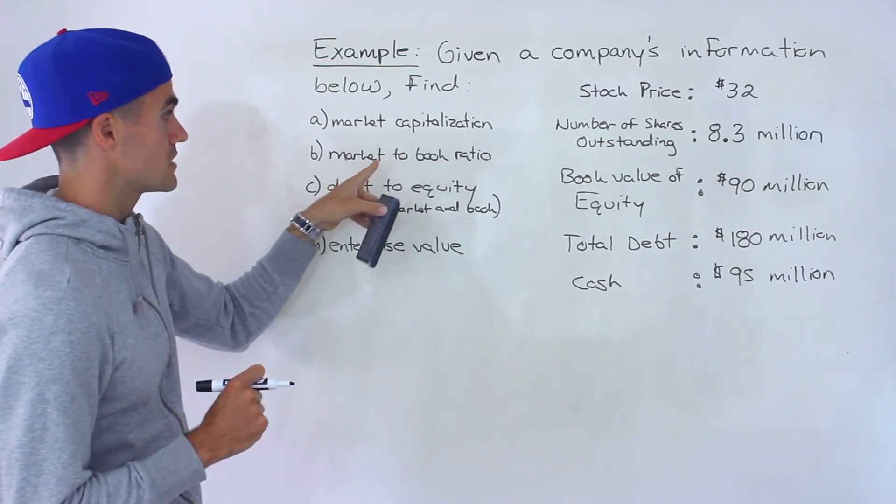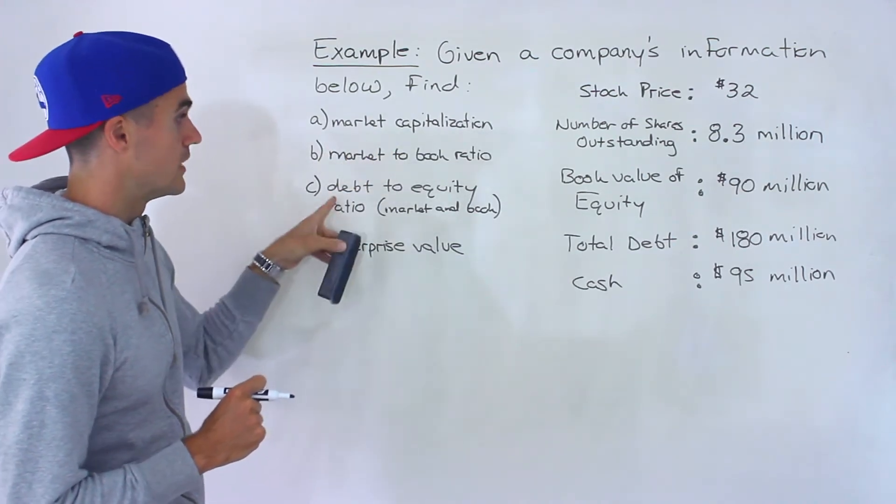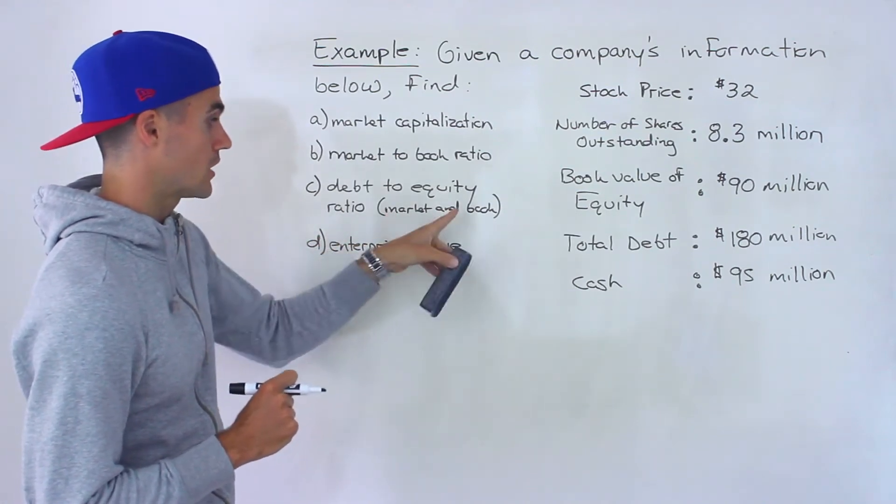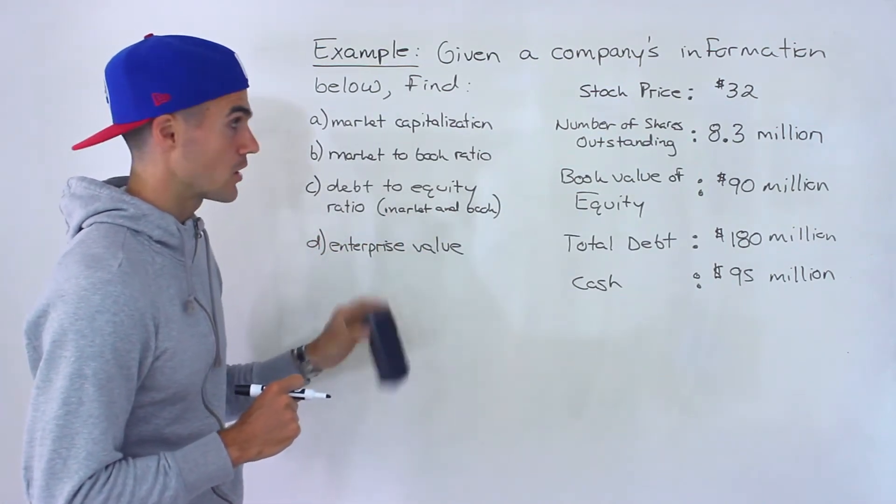We have to find the market capitalization, the market to book ratio, debt to equity ratio, the market and book, and then the enterprise value.